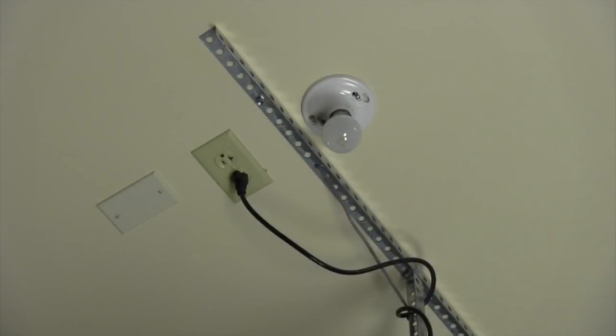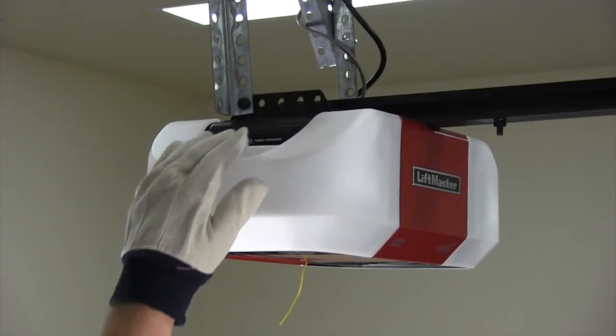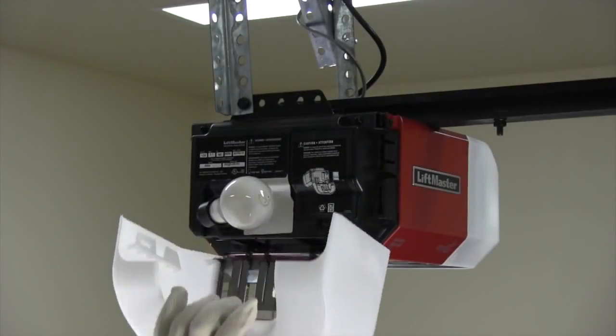First, unplug the garage door opener. Open the light lens on the garage door opener to access the battery compartment.